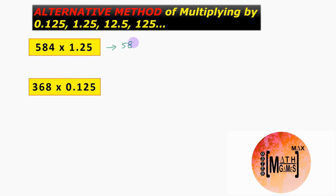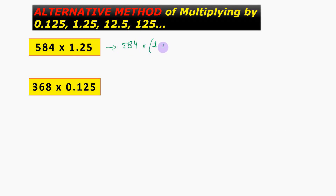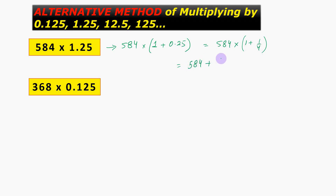We have 584 into 1.25. Multiplying by 1.25 means multiplying by 1 plus 0.25. Now, 0.25 is nothing but 1 by 4, so this is 584 into 1 plus 1 by 4. Therefore, we have 584 plus 584 divided by 4. Now 584 divided by 4 equals 292 divided by 2, which equals 146. So, 584 plus 146 gives us the answer as 730.